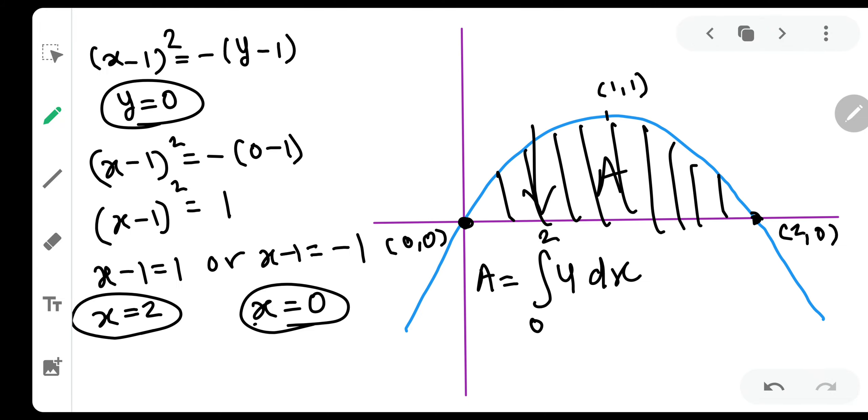This was our curve. So what will be y? Y will definitely be 1 minus x minus 1 the whole square. Area is nothing but integration from 0 to 2 y dx. Which is nothing but 0 to 2, 1 minus x minus 1 the whole square dx.